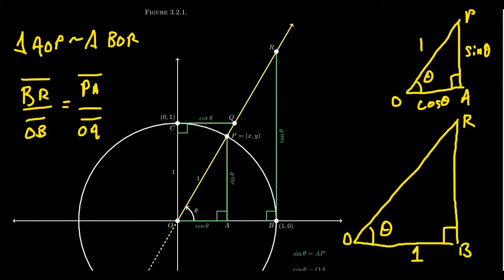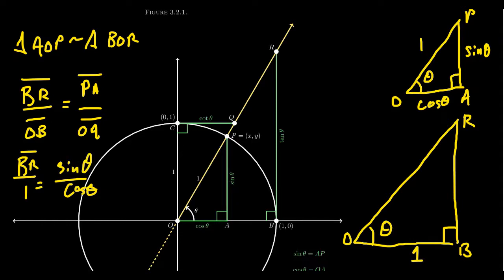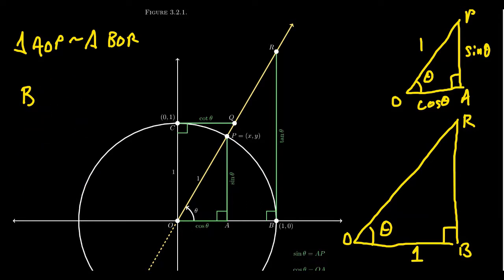Taking BR over OB: BR is the unknown side, which corresponds to PA (the opposite side of triangle AOP), and OB corresponds to OA (the adjacent side). OB is 1, OA is cosine theta, and PA is sine theta. So BR over 1 equals sine over cosine, which gives us BR equals tangent theta. So this distance BR is equal to tangent of theta.